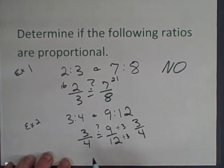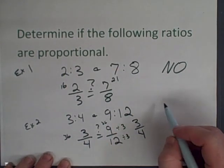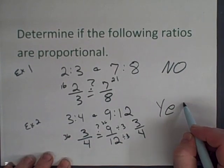Again you can find the cross products. Twelve times three is 36 and nine times four is 36. 36 equals 36. So three fourths or three to four and nine to twelve are proportional.